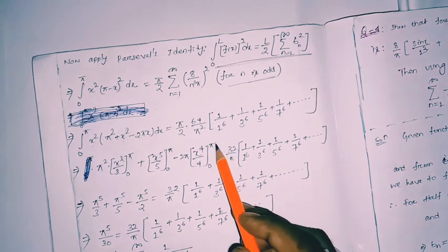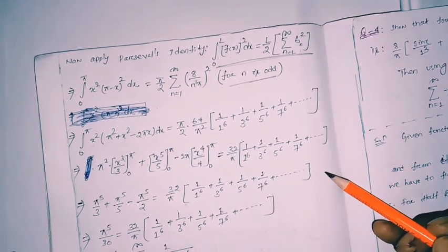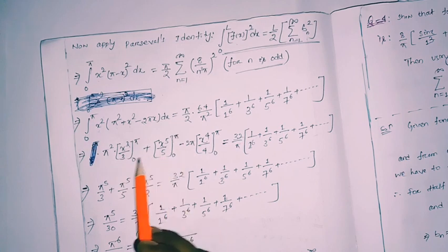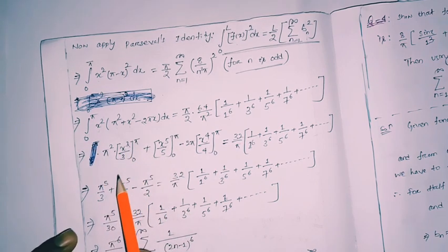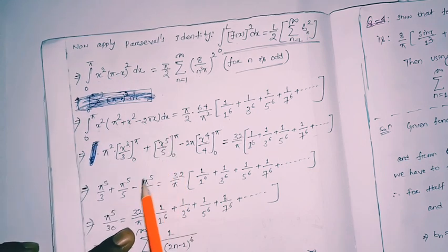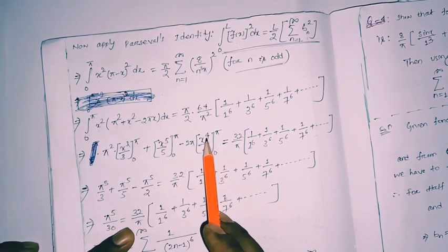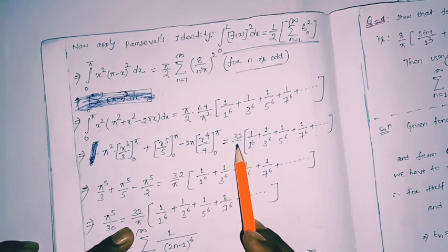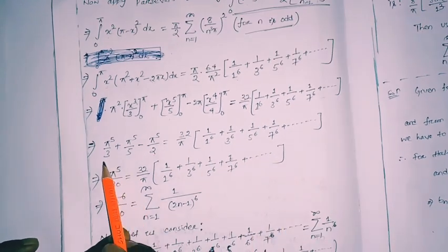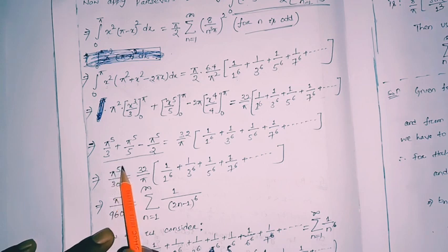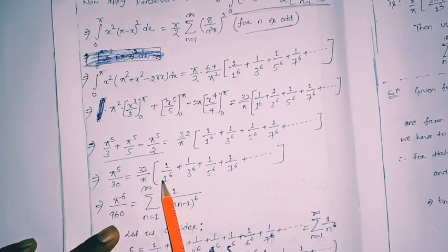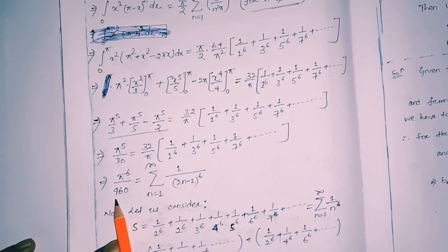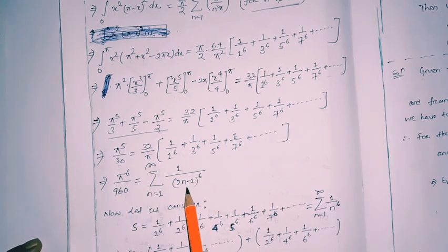Substituting the limits: π²·(π³/3) = π⁵/3, the second term gives π⁵/5, and the third gives 2π·(π⁴/4) = π⁵/2. Combining these gives π⁵/5 − π⁵/2 + π⁵/3, which simplifies to π⁵/30. Setting this equal to (32/π)·Σ1/n⁶ for odd n, cross-multiplying gives π⁶/960 = Σ 1/(2n−1)⁶.